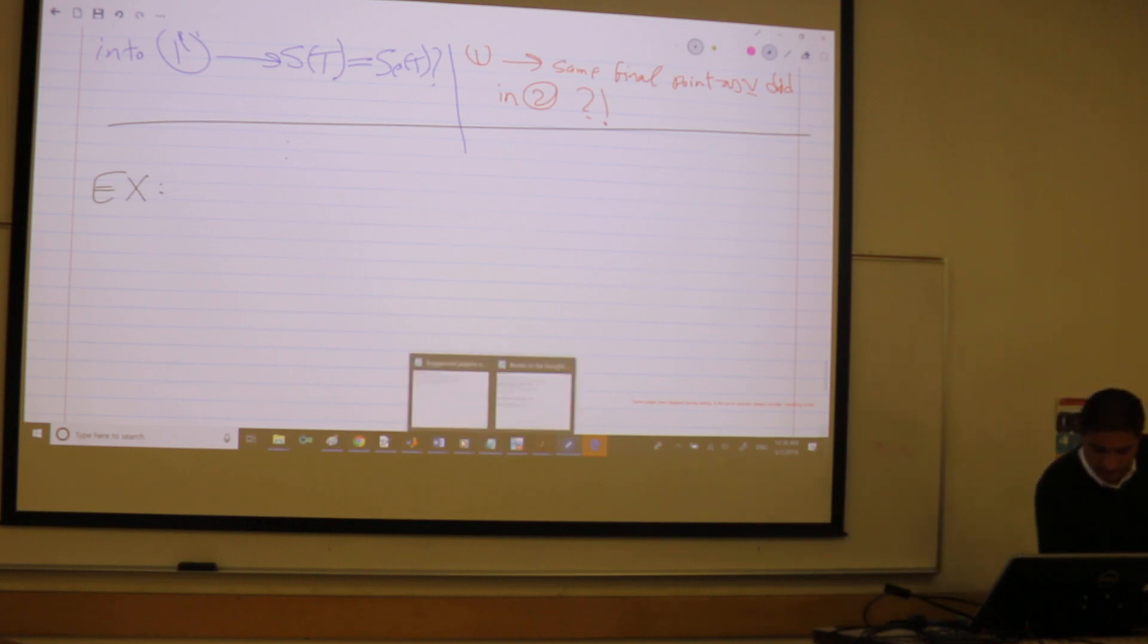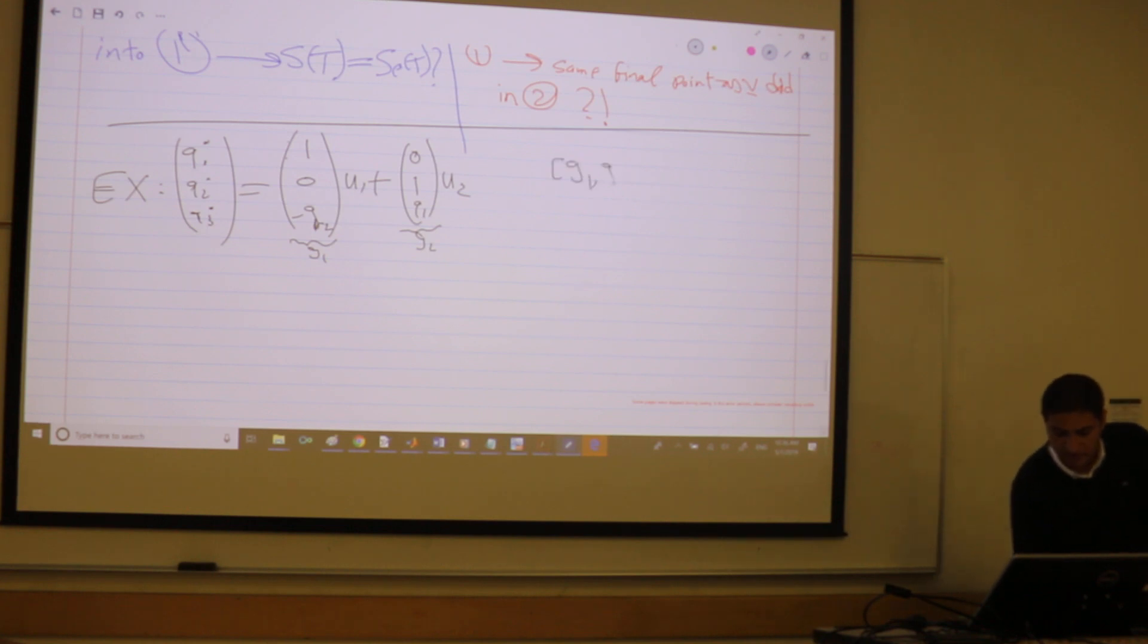Our usual example that we discussed last time, Q3 dot was two vector fields. This was (1,0) and (0,1), and this was something like (-Q2, Q1). So this is G1 and this is G2. And my Lie brackets, [G1,G2], was (0,0,2). And when you take one more Lie bracket with G1, this completely vanishes. And this guy also completely vanishes.